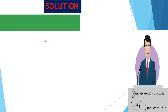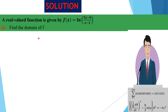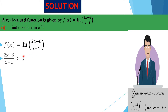The first part is to find the domain of f. Since this is a logarithmic function, we need the argument to be strictly greater than zero. So we need (2x-6)/(x-1) > 0. Solving this inequality gives the solution set: x < 1 or x > 3.